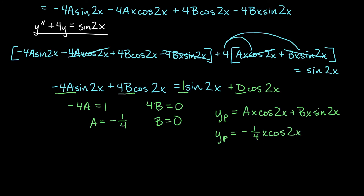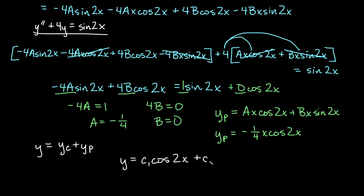Writing the general solution as yc plus yp, we get y equals c1 cosine 2x plus c2 sine 2x minus one-fourth x cosine 2x.